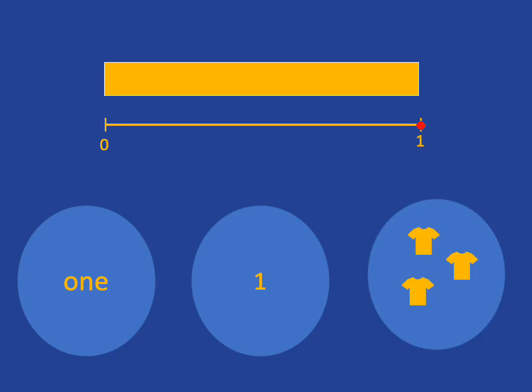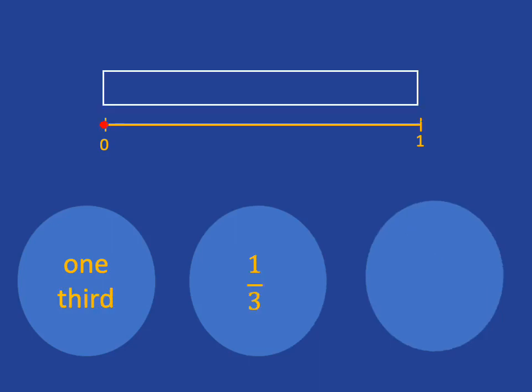So here, for example, I have three t-shirts that are in a collection, so I have one collection of t-shirts here. Let's consider now the fraction one third, which I can write either in words or in symbols.